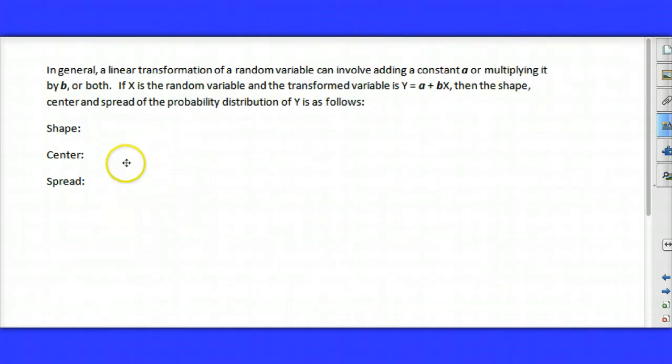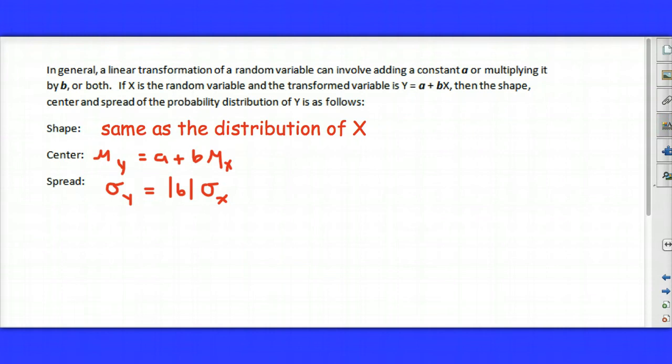So let's see if you can summarize this. Pause the video for a second and see if you can summarize what happens when we take a random variable and multiply it by one constant and add another. Well, as we saw in our two examples, the distribution didn't change. The shape of the distribution, if it was originally uniform for the random variable, when we transformed it, the distribution was still uniform. It doesn't really matter what the initial shape of the distribution was. The shape of the distribution was not changed.